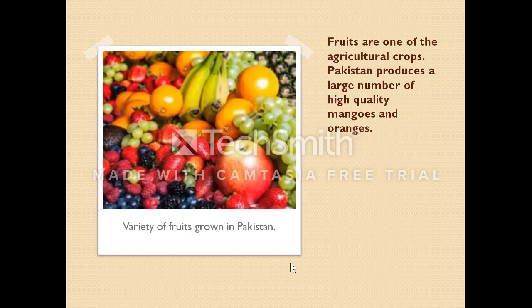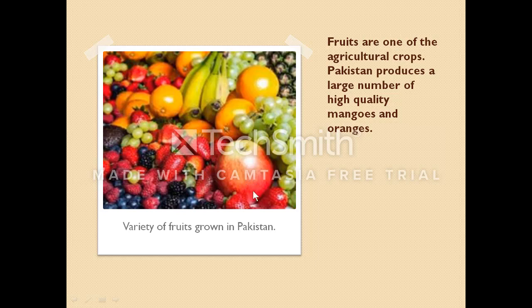Here we have fruits. I just love fruits! Fruits are one of the agricultural crops. Pakistan produces a large number of high-quality mangoes and oranges. Not all fruits shown are native to Pakistan — for example, strawberry is available but isn't native, and blueberries and raspberries are not available here. We have oranges, bananas, apples, grapes, and a variety of fruits. But our mangoes are just the best — not comparable.